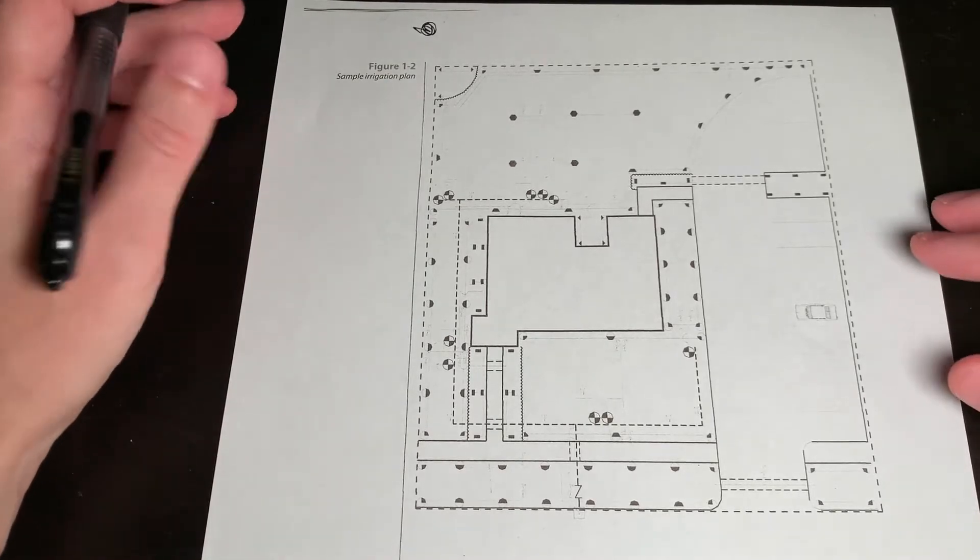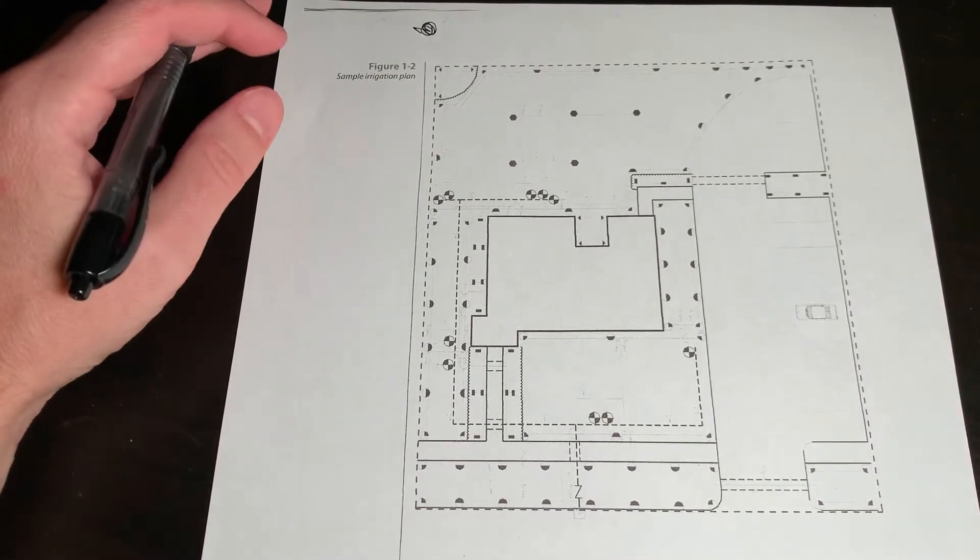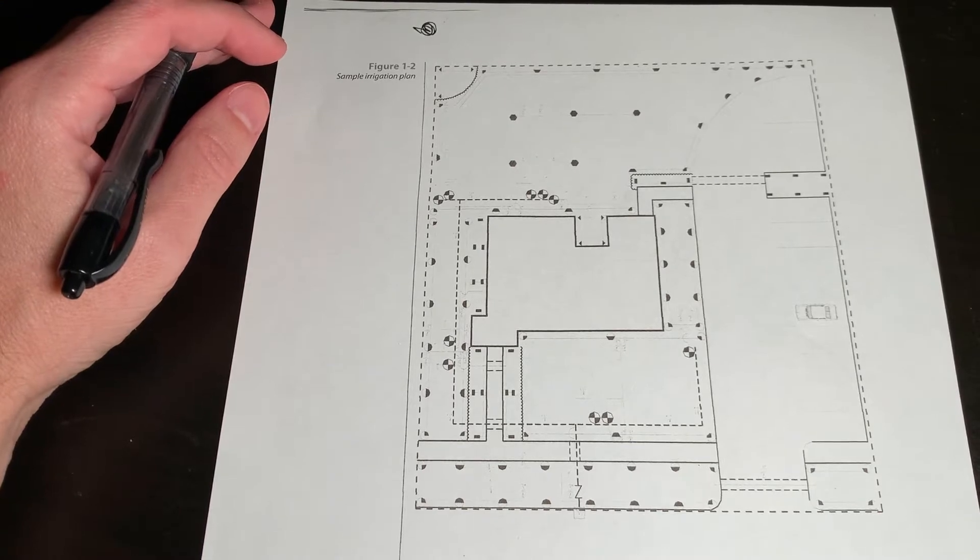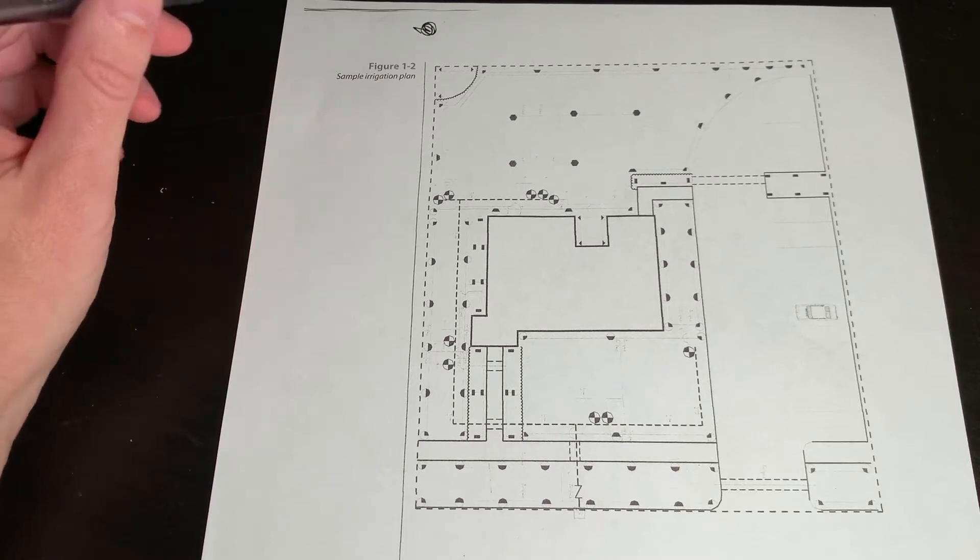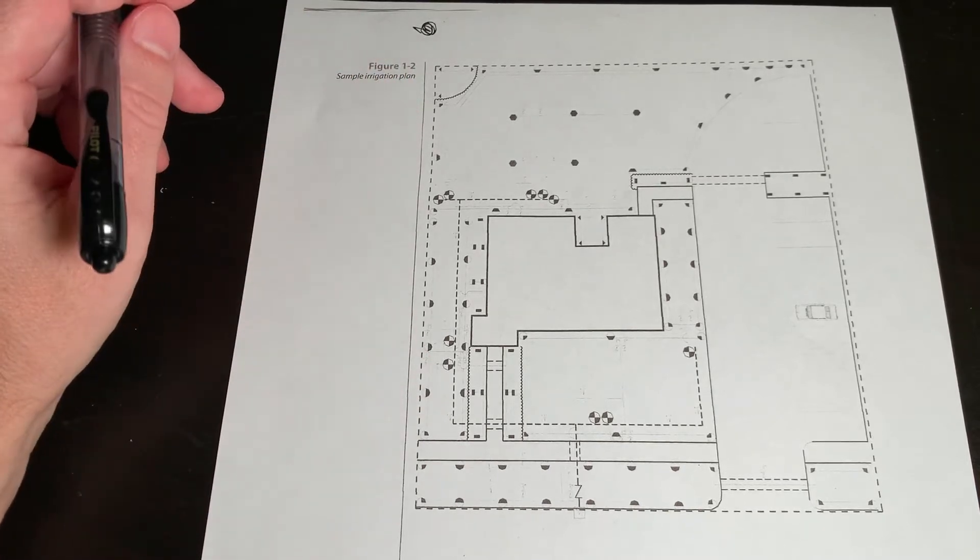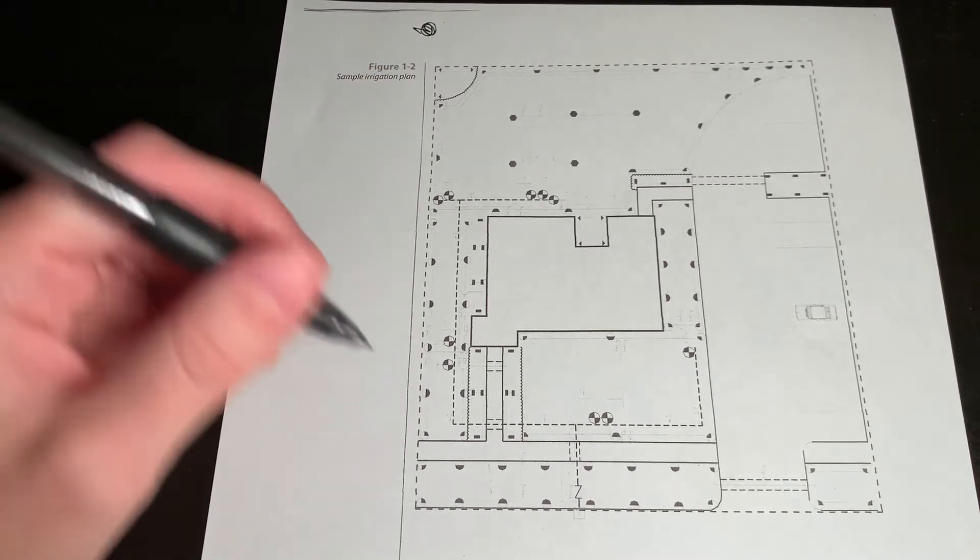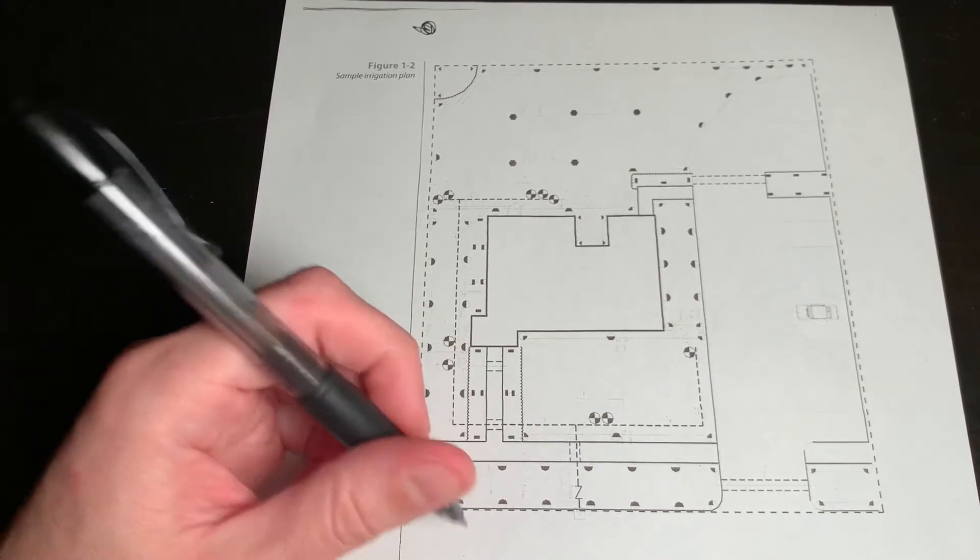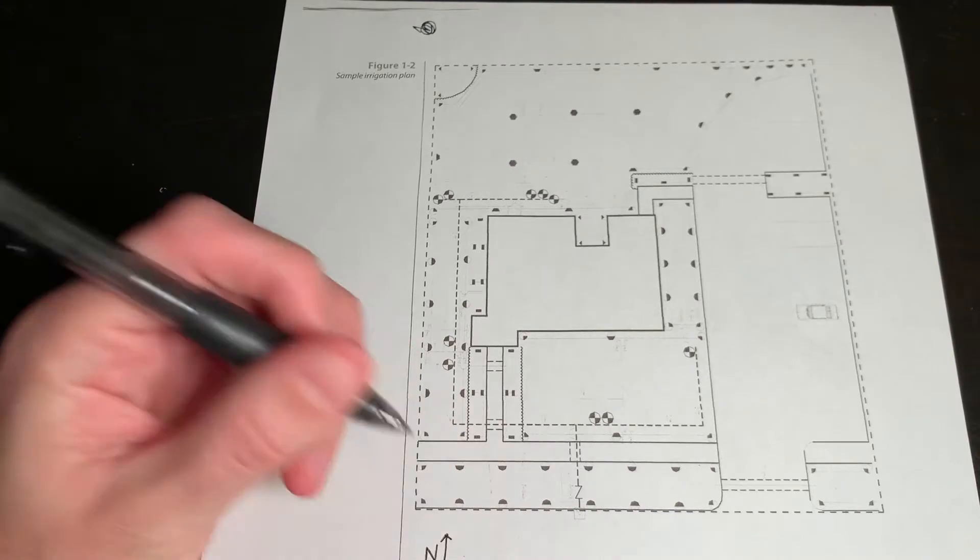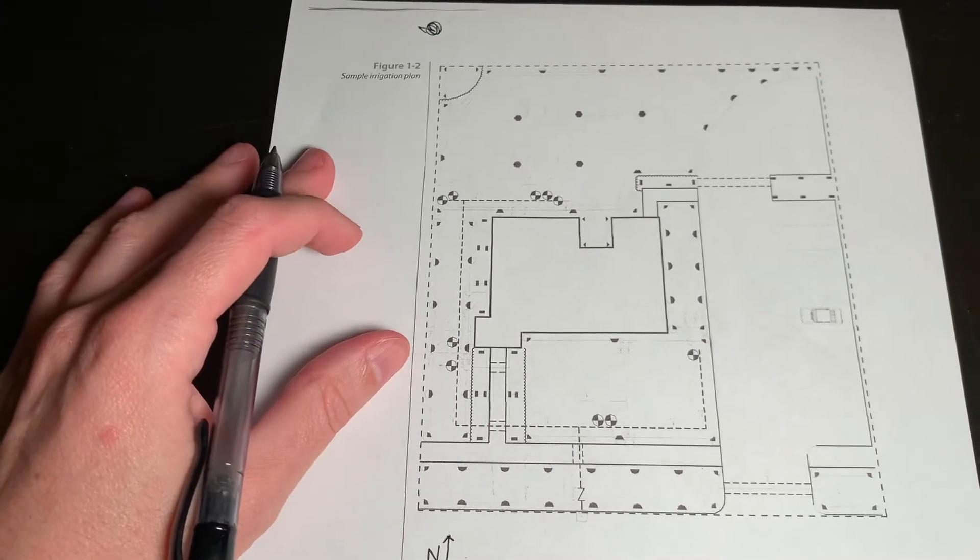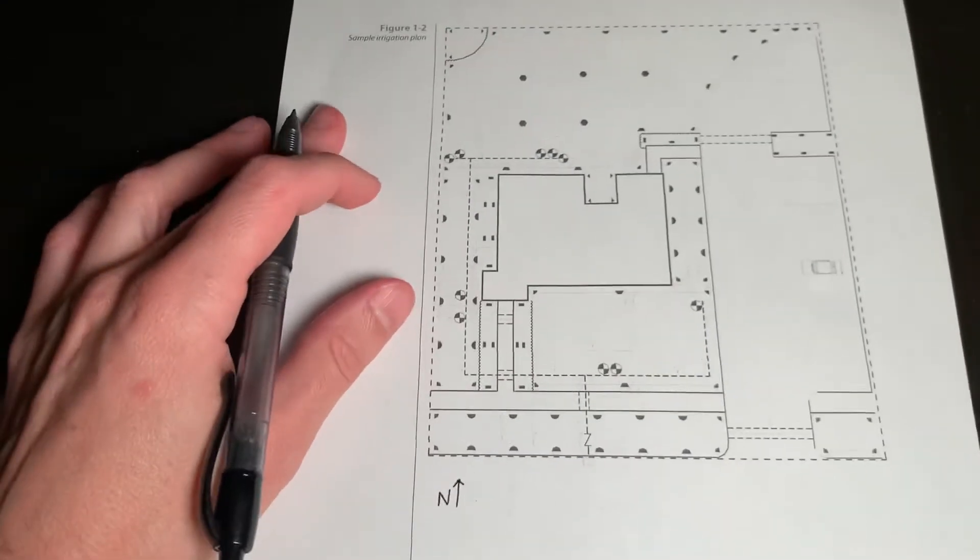So there can be some variation when you look at these different plans. But there's enough uniformity for there to be standards. This plan is missing a few key things. One thing that it's missing is a compass. So you need to know what direction is north, so that you know your orientation.